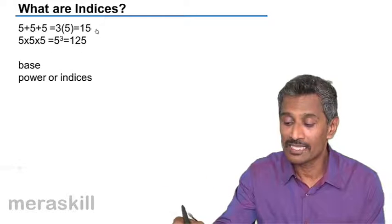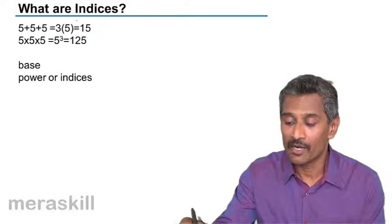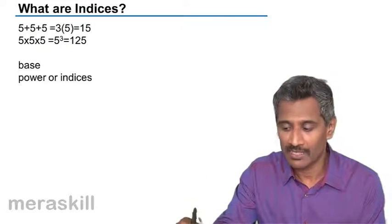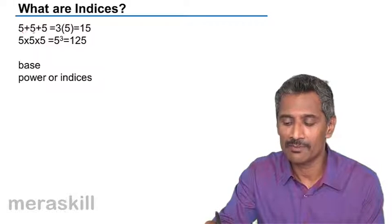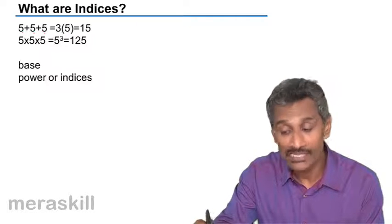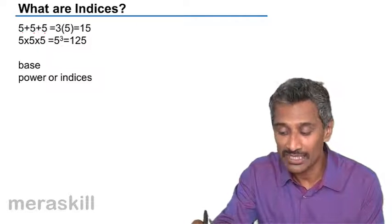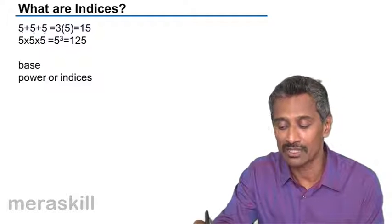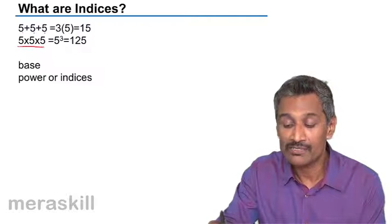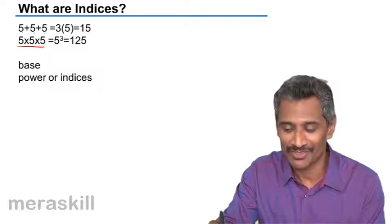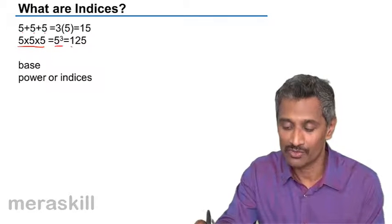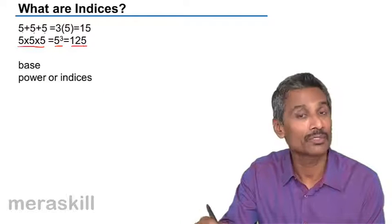As said earlier, we have the concept of indices. This is 5 plus 5 plus 5, so it's 5 added by itself 3 times — that's 3 into 5, which is 15. Whereas here, it's 5 into 5 into 5, which is 5 cubed, and that is going to be 125.